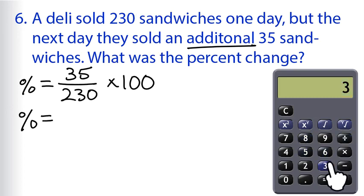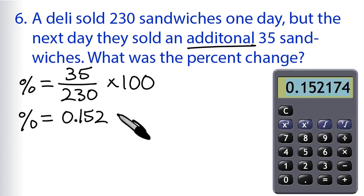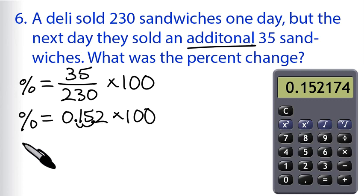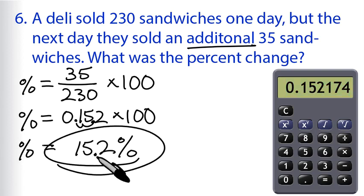We do 35 divided by 230 and get 0.152. So we have 0.152 times 100 — you can do that on the calculator or just move the decimal point two places to the right. The percent change equals 15.2%, and that's positive — that's an increase. So if you sell 230 sandwiches, and then the next day an additional 35 sandwiches, that's a 15.2% increase.